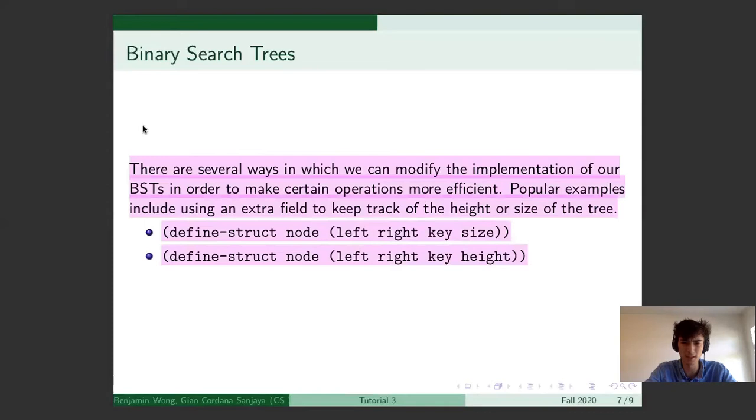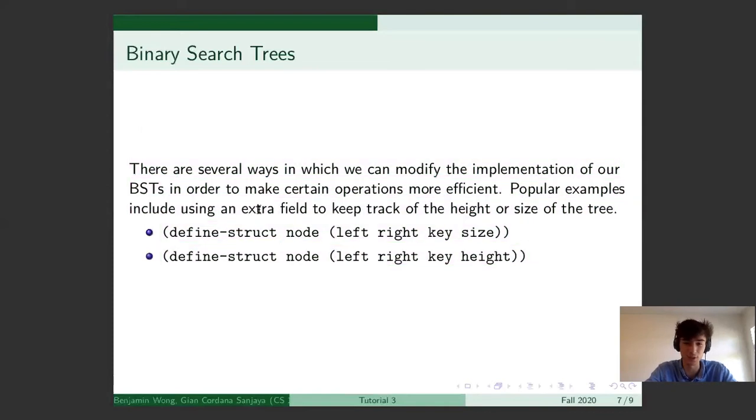We can modify the implementation of the BST to make certain algorithms and operations run faster. It's really useful to understand these two modifications in particular. One where you decorate the tree with the key, but also the size. So you'll see something very similar to this in a4a, I believe. Where you're asked to grow and shrink trees, but you get to access the size in constant time.